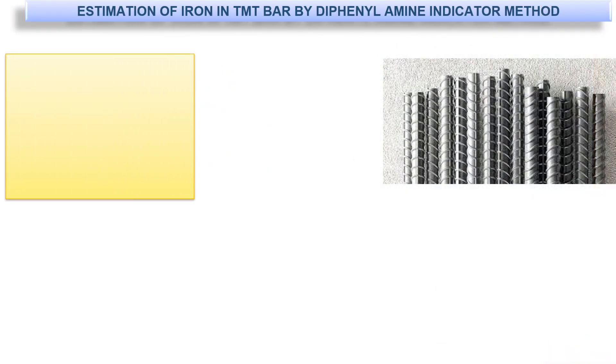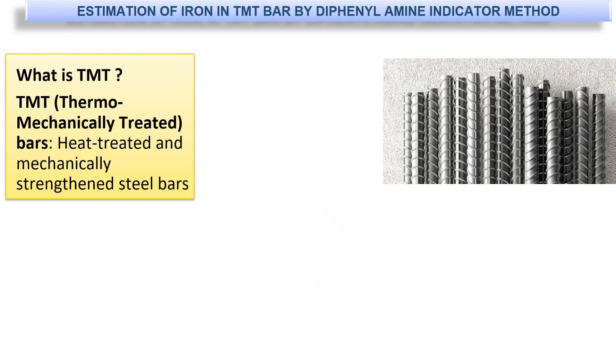So initially, let us see what is TMT. TMT is thermomechanically treated bars — heat treated and mechanically strengthened steel bars.